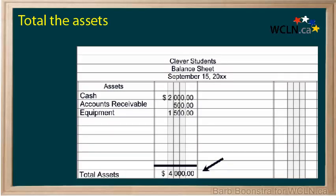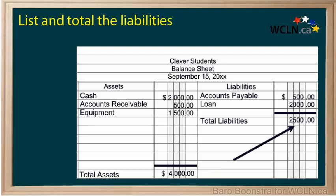Draw a single line — in accounting this indicates either addition or subtraction — and total the assets. The title of this line will be total assets. Put in the title liabilities, again this is centered, and list the liabilities, put in the summation line, and put in the total liabilities.